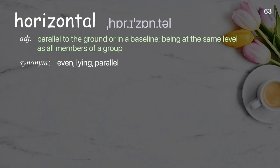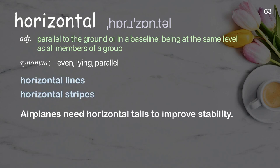Horizontal: parallel to the ground or in a baseline; being at the same level as all members of a group. Examples: horizontal lines, horizontal stripes. Airplanes need horizontal tails to improve stability.